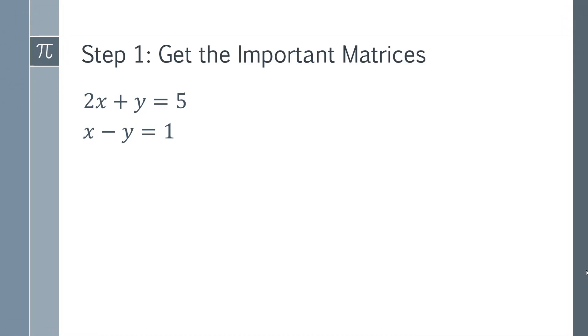The first step for applying Cramer's Rule is to get the essential matrices. We're going to get matrix A, matrix AX, and matrix AY. Then we can do some processing on those matrices and ultimately get the solution to these equations.